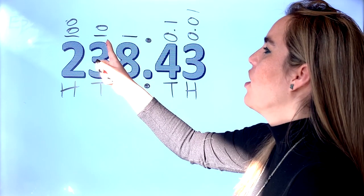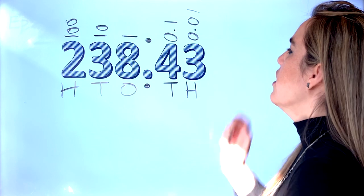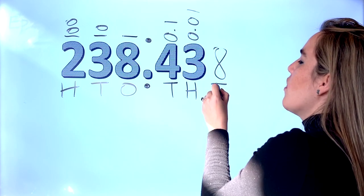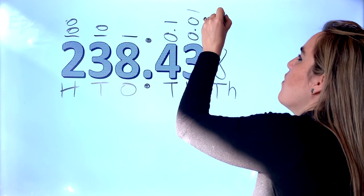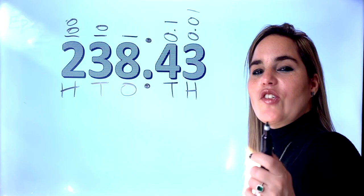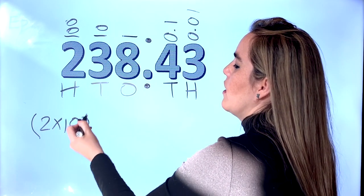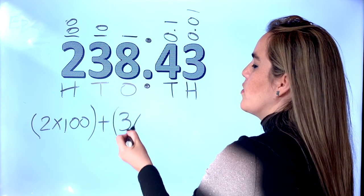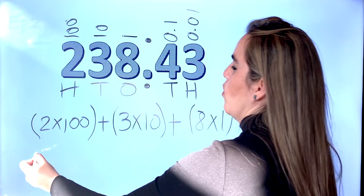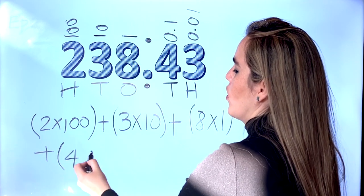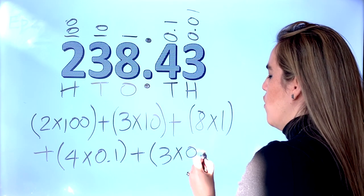As you can see the pattern: on the left side we are adding zeros, and on the right side you're adding zeros in between the decimal point and the one. So if we had an eight in the thousandths place, you'd write zero-point-zero-zero-one — that just shows how the pattern works. Now: two groups of one-hundred, plus three groups of ten, plus eight groups of one, plus four groups of zero-point-one (one-tenth), plus three groups of one-hundredth.